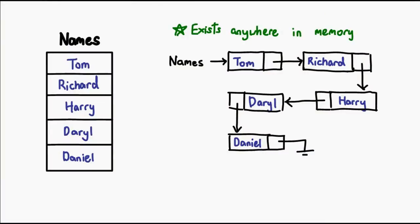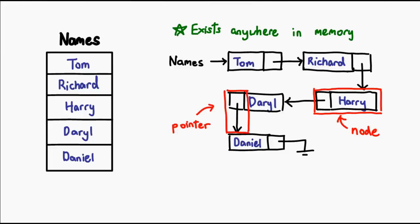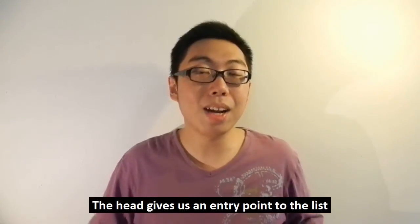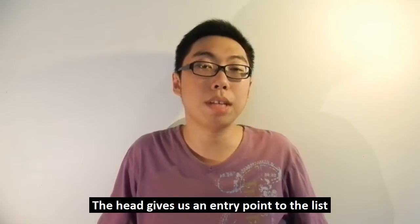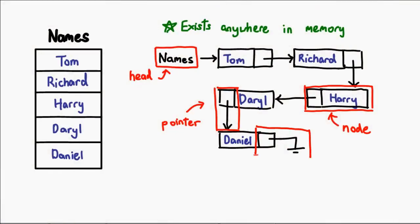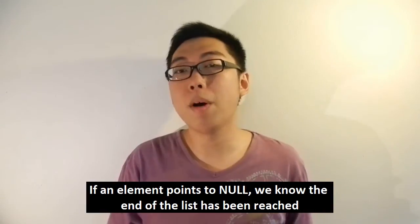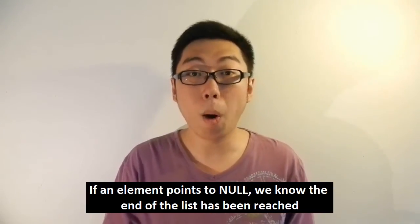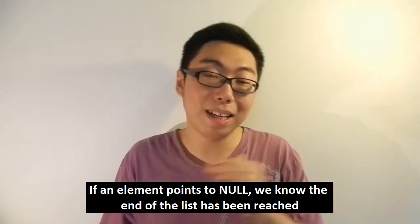Basically, that is a linked list. A linked list consists of nodes. Every node has a pointer which tells us where the next node is, and to make the whole thing complete, we also need to have a head. The reason why we have a head is so that we can refer to the entire list. By knowing where the head of the list is, I can just follow the arrows and keep jumping until I find the element I want or I get to the end of the list. The pointer of the last element in the list points to a null position, and this tells us that the list has ended.